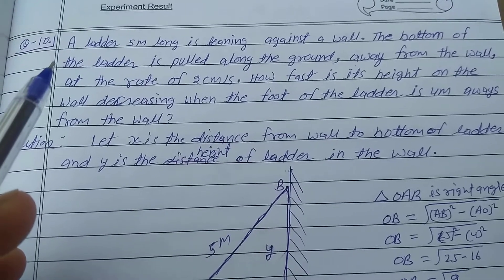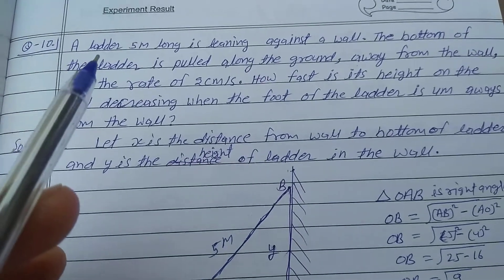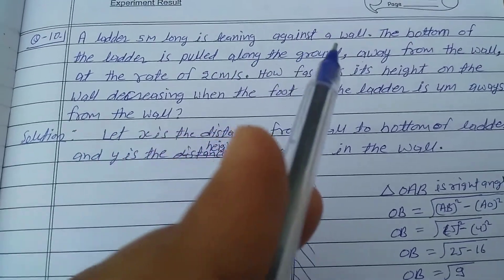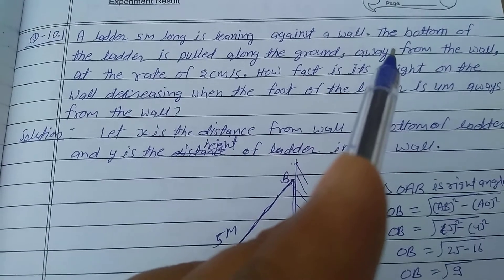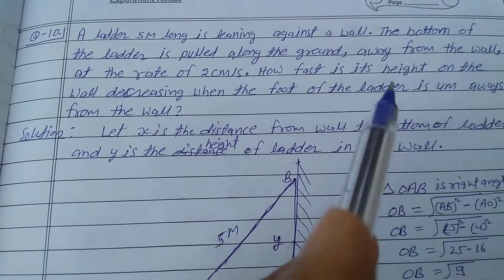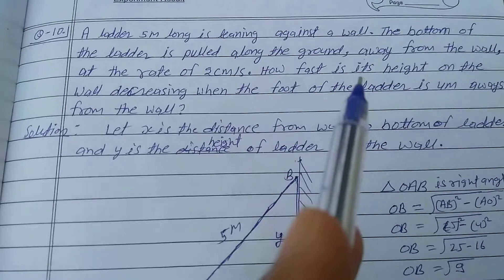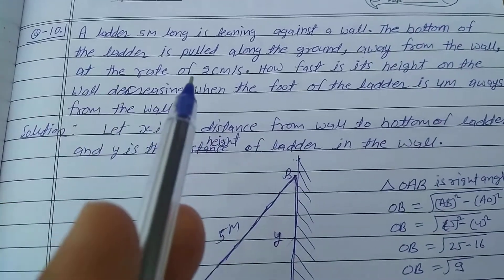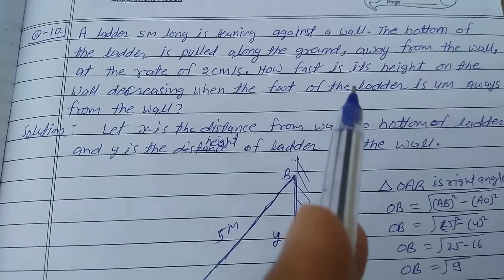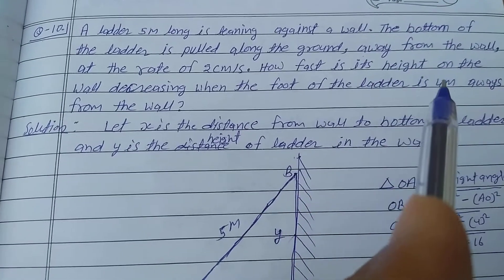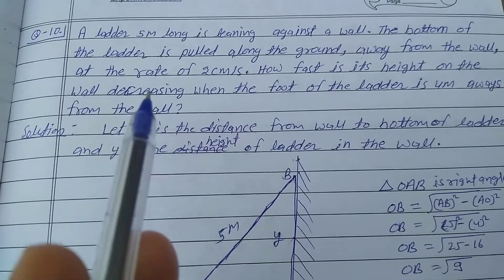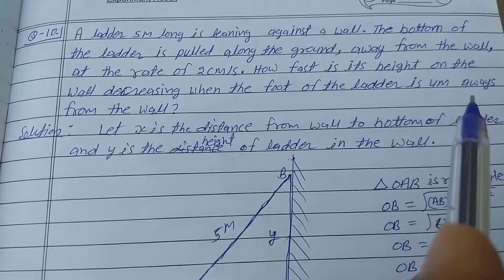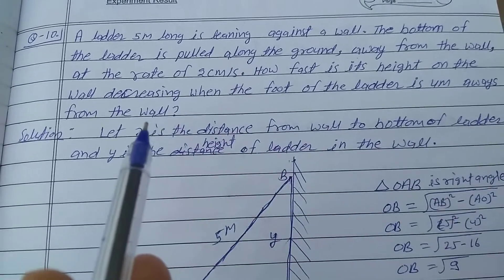Explain question number 10, Exercise 6.1, Class 12. A ladder 5 meters long is leaning against a wall. The bottom of the ladder is pulled along the ground, away from the wall at the rate of 2 cm per second. How fast is its height on the wall decreasing when the foot of the ladder is 5 meters away from the wall?